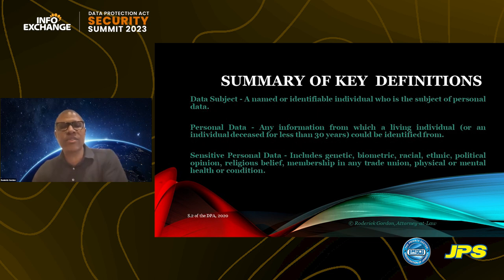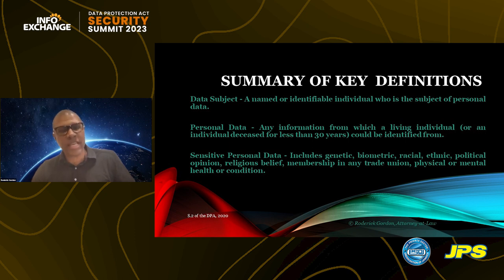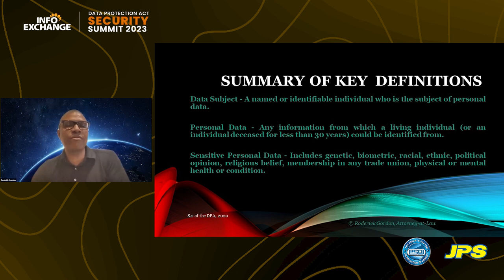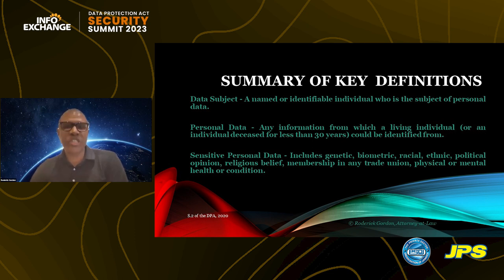When you look at the Data Protection Act, the data subject is the person who can say you have used my data in an unauthorized way. The Act defines personal data as any information from which a living individual — or a deceased individual who has been deceased for less than 30 years — could be identified. It further defines sensitive personal data, which includes genetic, biometric, racial, ethnic, political opinion, religious belief, trade union membership, and physical or mental health — paralleling constitutional privacy rights globally.